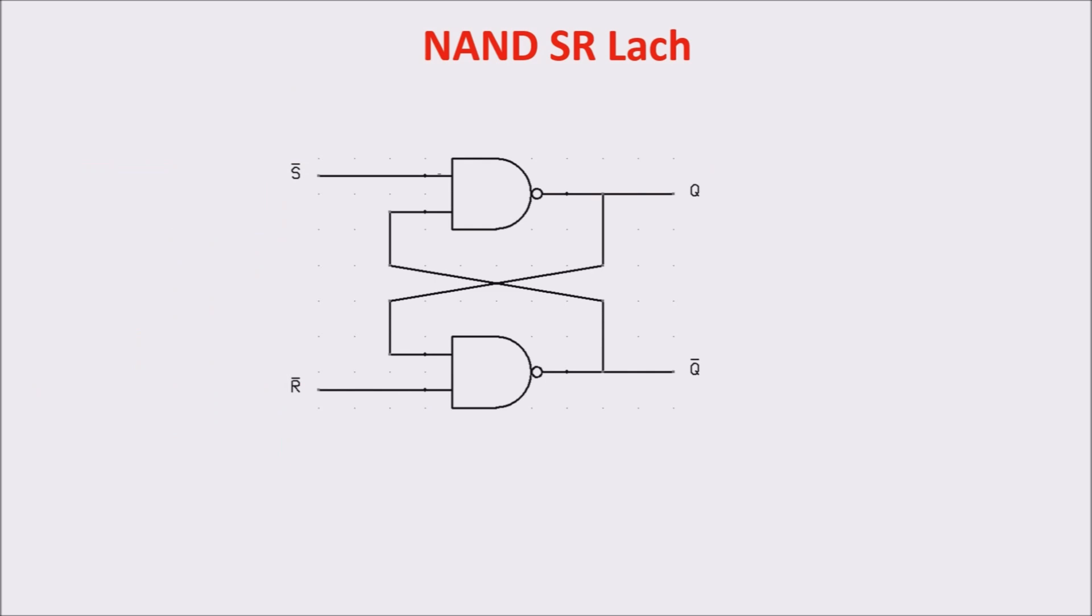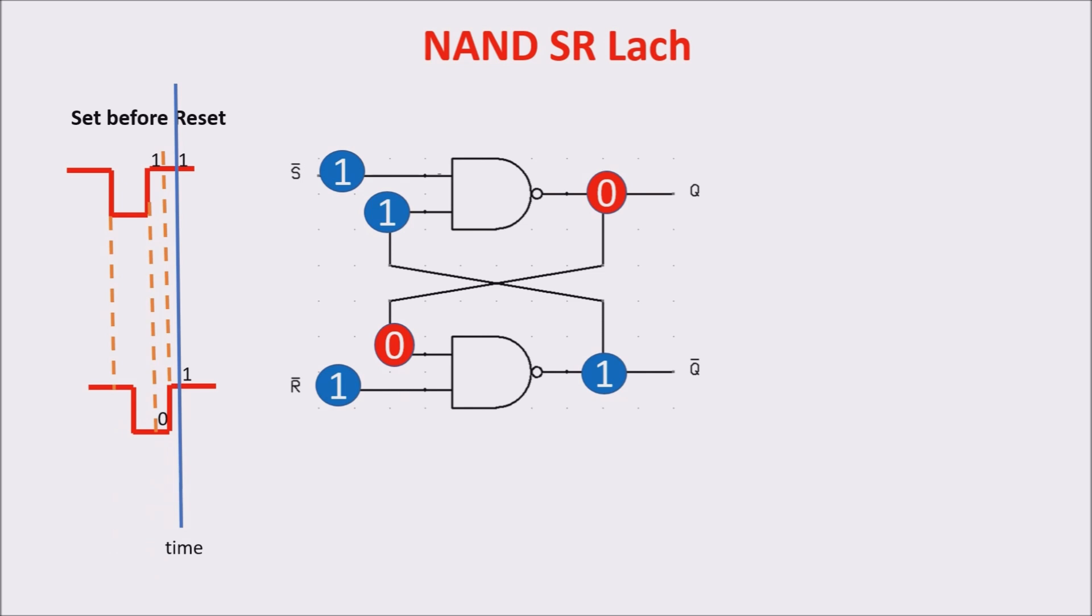On the contrary, if SET arrives before reset, we have a zero pulse reset before the memory situation in which inputs are both one. So, output Q this time is zero.